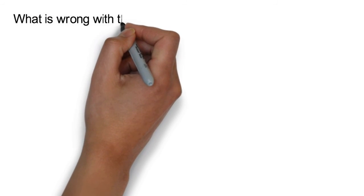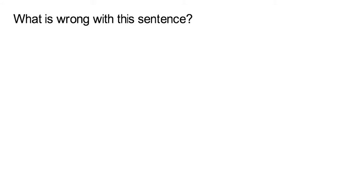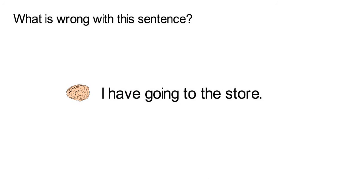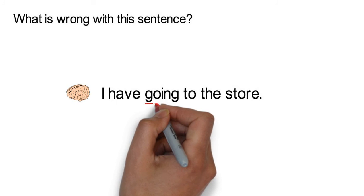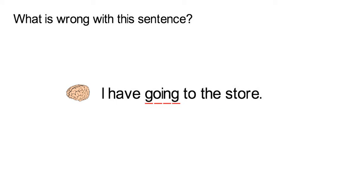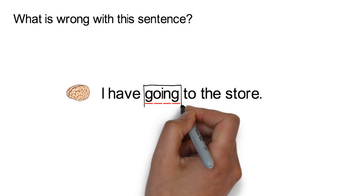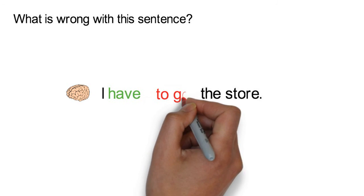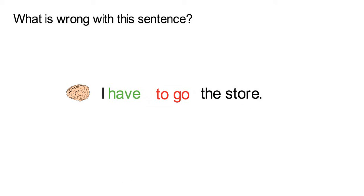What is wrong with this sentence: 'I have going to the store'? In this sentence, there is a gerund — the gerund is going, and the verb is have. The sentence should read 'I have to go to the store.' The verb have is usually followed by an infinitive, not a gerund.